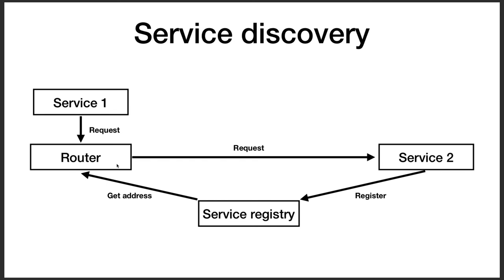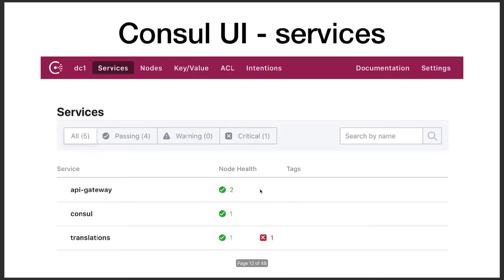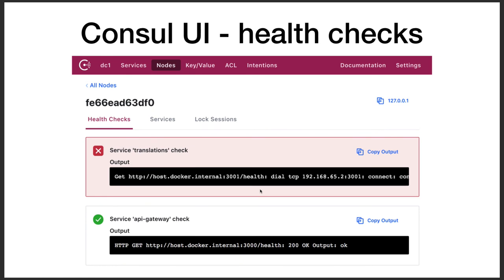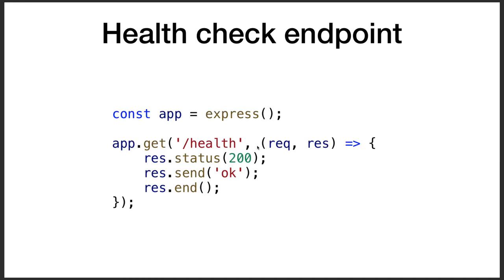For client-side service registry there's Netflix Eureka; for server-side there's AWS ELB. Whenever a service comes up it registers, and when it goes down it deregisters, so client requests can be routed appropriately. A great tool for service discovery is Consul, provided by HashiCorp. You can spin it up with a simple container — pull the image and instantiate a container — and it enables health checks and data communications between services.